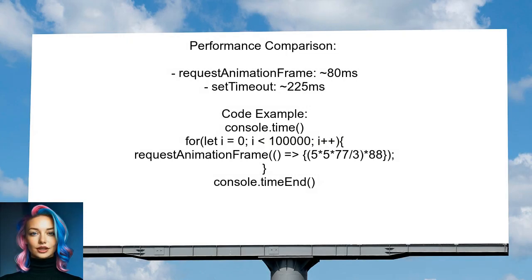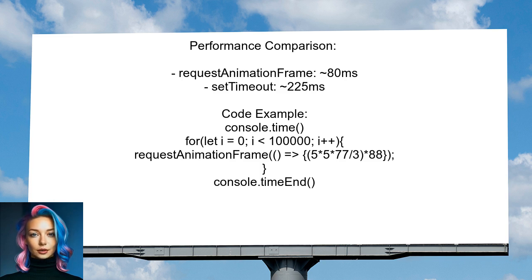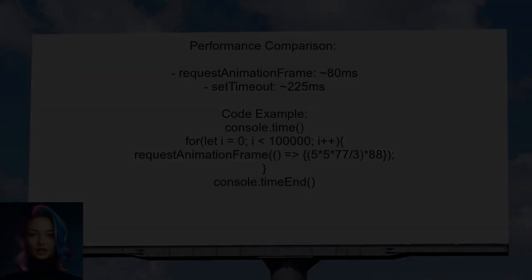Interestingly, a performance test showed that requestAnimationFrame is significantly faster than setTimeout. For example, running a loop with requestAnimationFrame took about 80 milliseconds, while setTimeout took around 225 milliseconds.